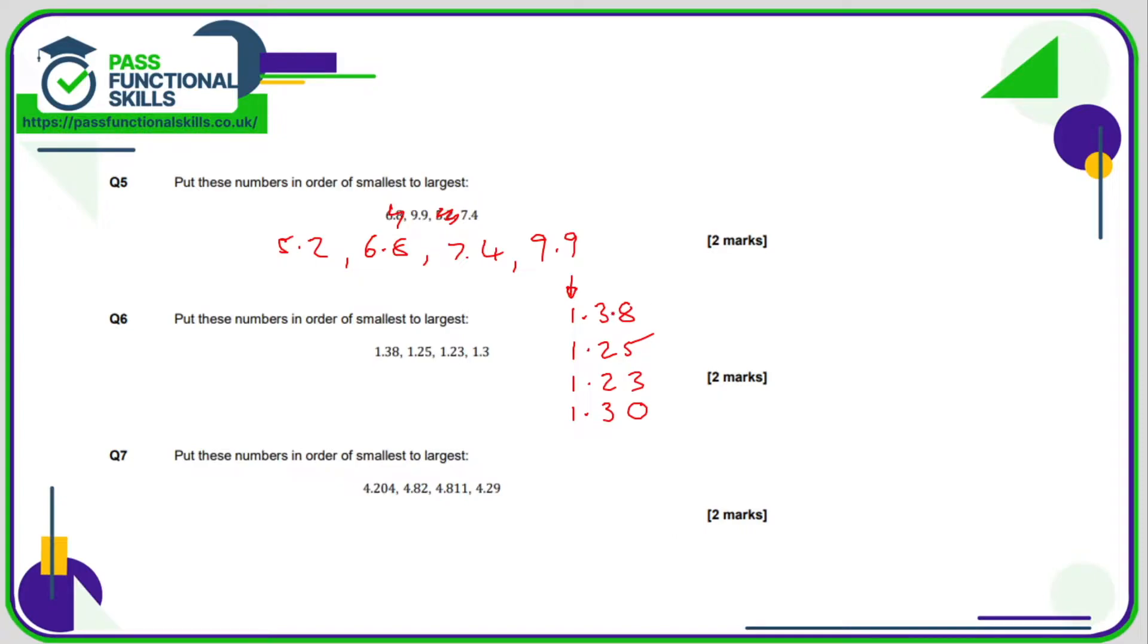Now we know that they are all equal in the units. But in the tenths column we've got a 3, a 2, a 2 and a 3. Now 2 is smaller than 3 so one of these two numbers is the smallest. So now we're going to compare the number that is in the hundredths column, 5 and a 3. 3 is smaller than 5, so therefore 1.23 is the smallest and 1.25 is the next smallest.